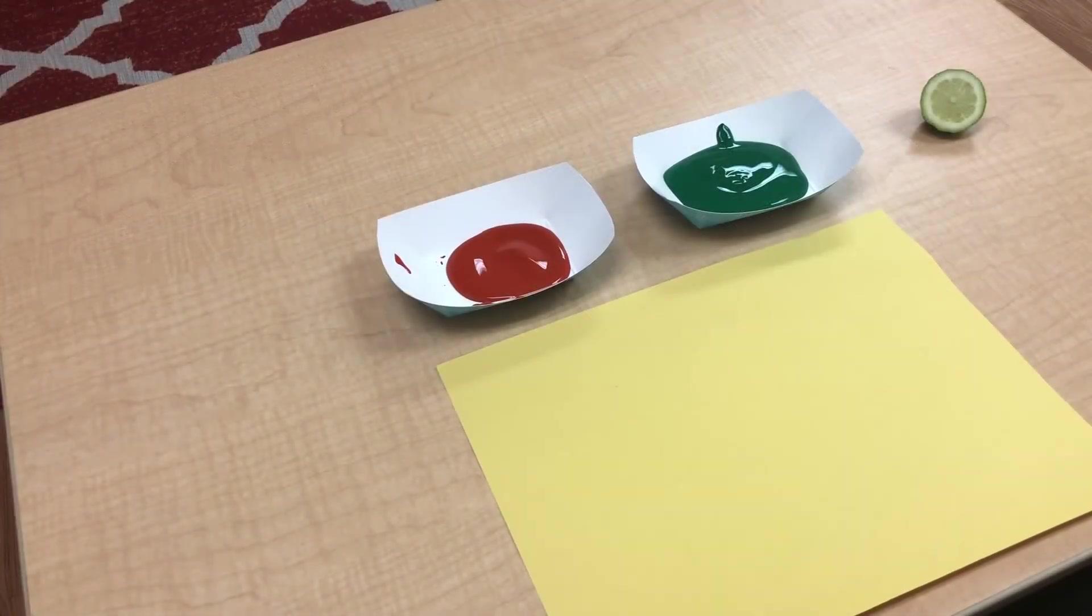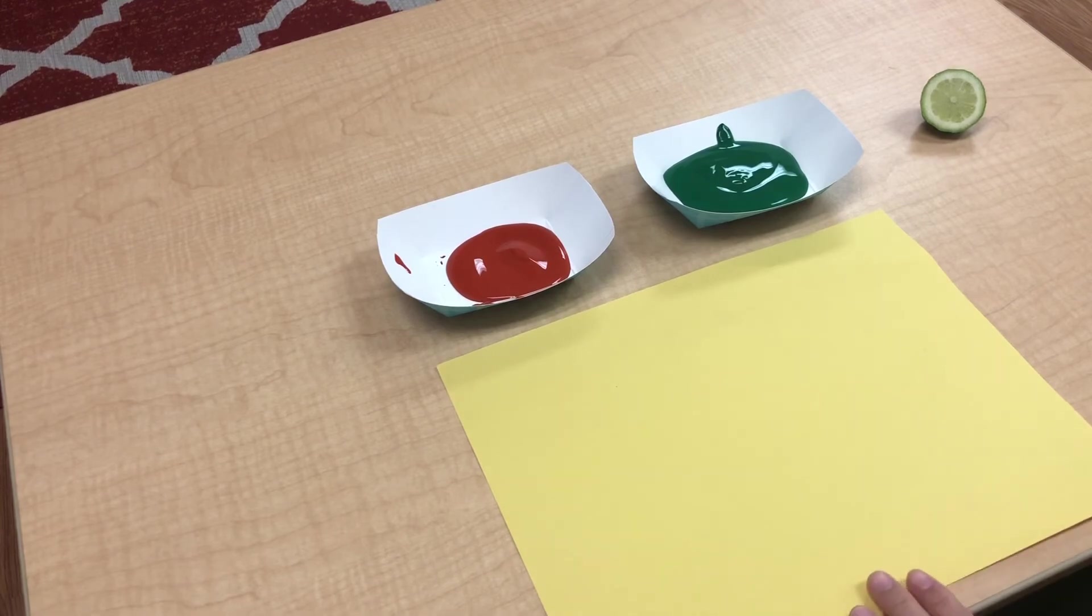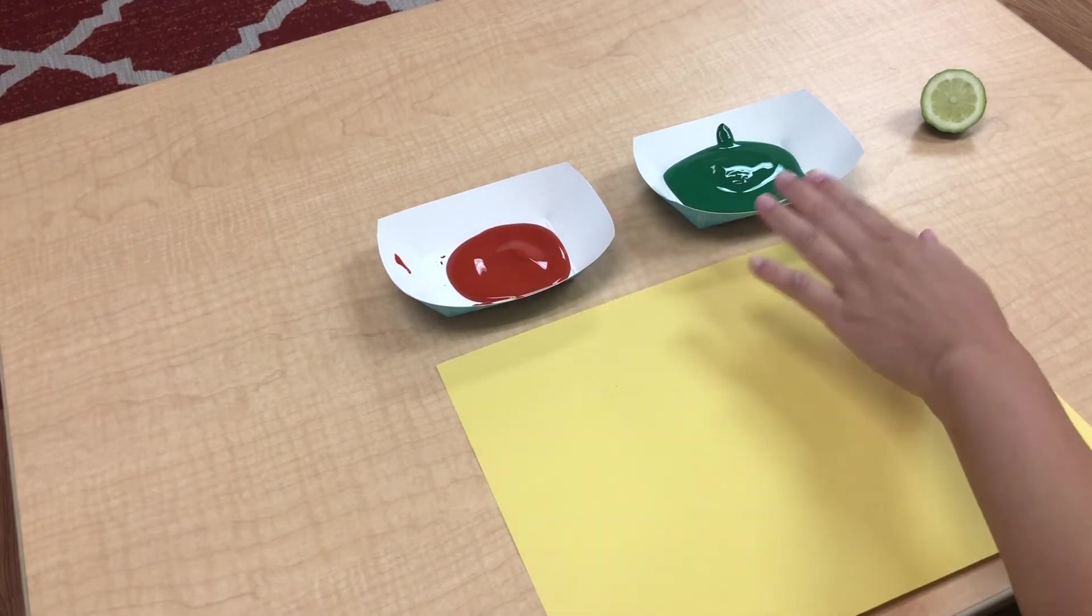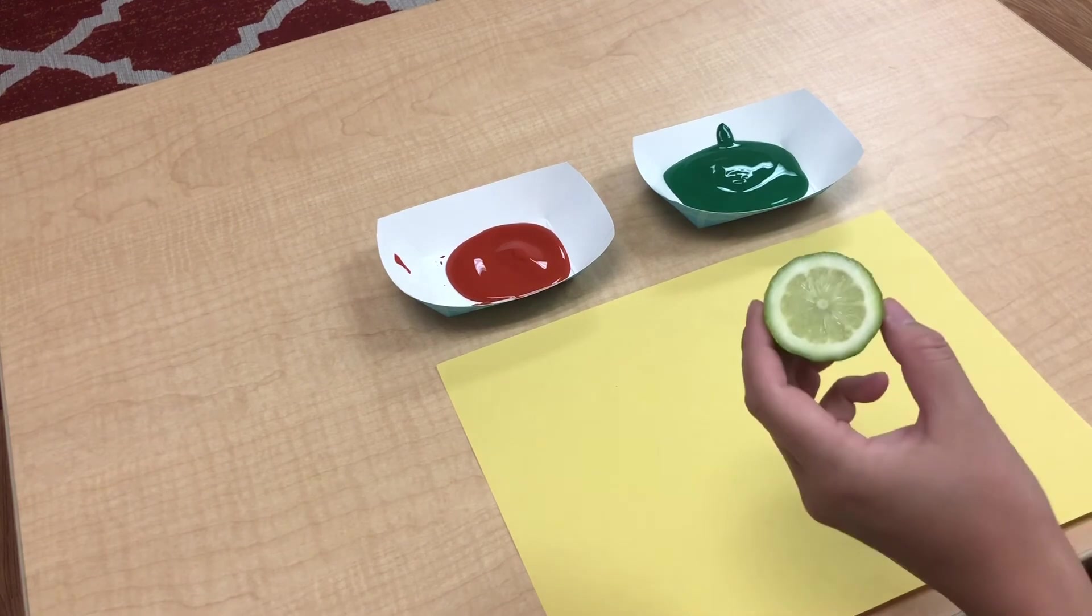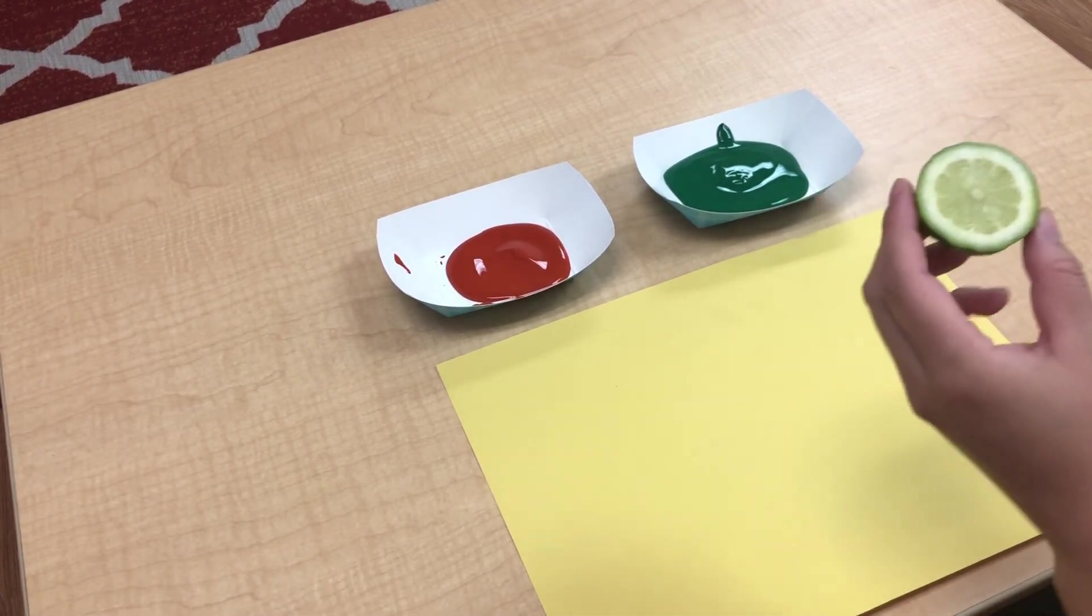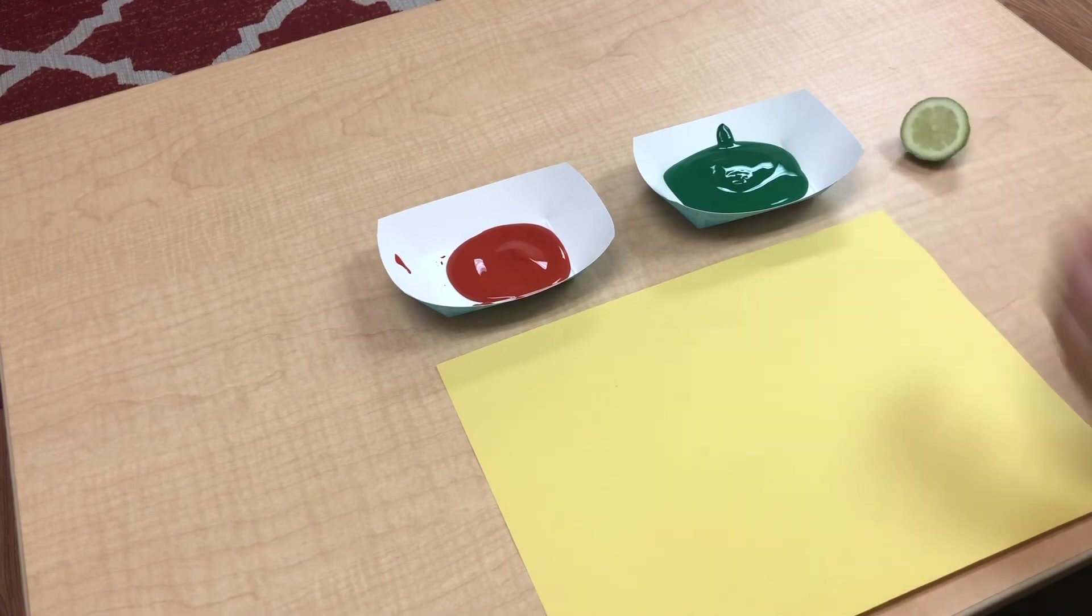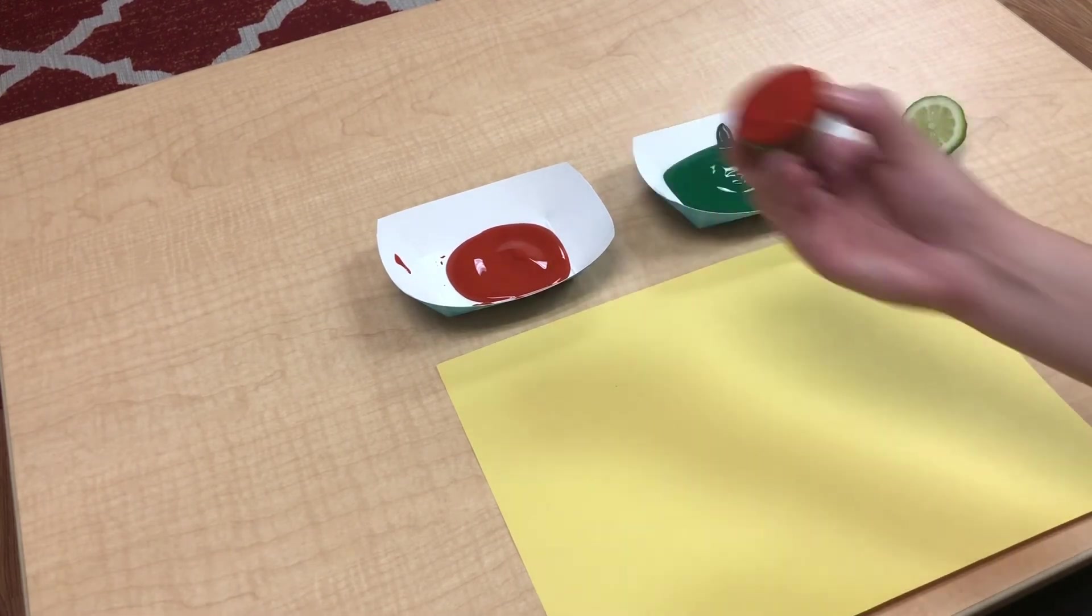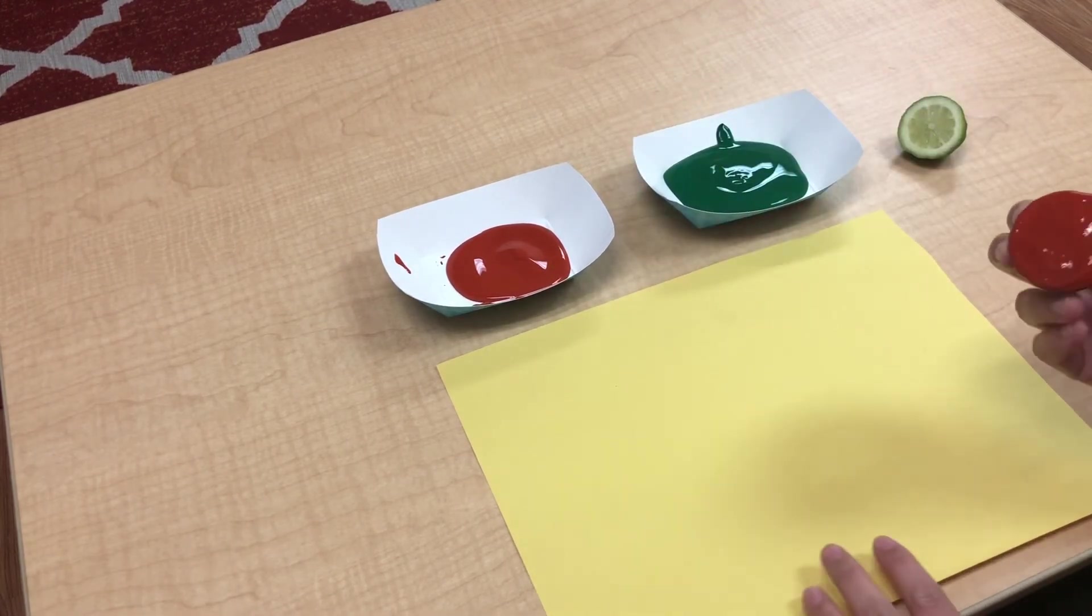Now we are going to do our lemon prints. We will need a construction paper, some paints, and also lemon or lime. If you don't have this lemon or limes, you can always use orange instead. Okay? Now I will dip into the paint and start my prints.